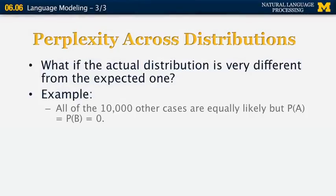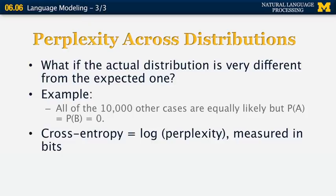Here's an example. Suppose we trained a language model with the previous data, but it turns out the 10,000 cases are equally likely and there are no options for the user to say either 'sales' or 'operator.' In that case, the new probability distribution is very different — instead of one quarter, one quarter, and 10,000 values adding to one half, we have zero, zero, and 10,000 values adding to one. The cross-entropy equals the log of the perplexity and is measured in bits. If the two probability distributions are very different, cross-entropy is very large; if they're similar, it's at its minimum.